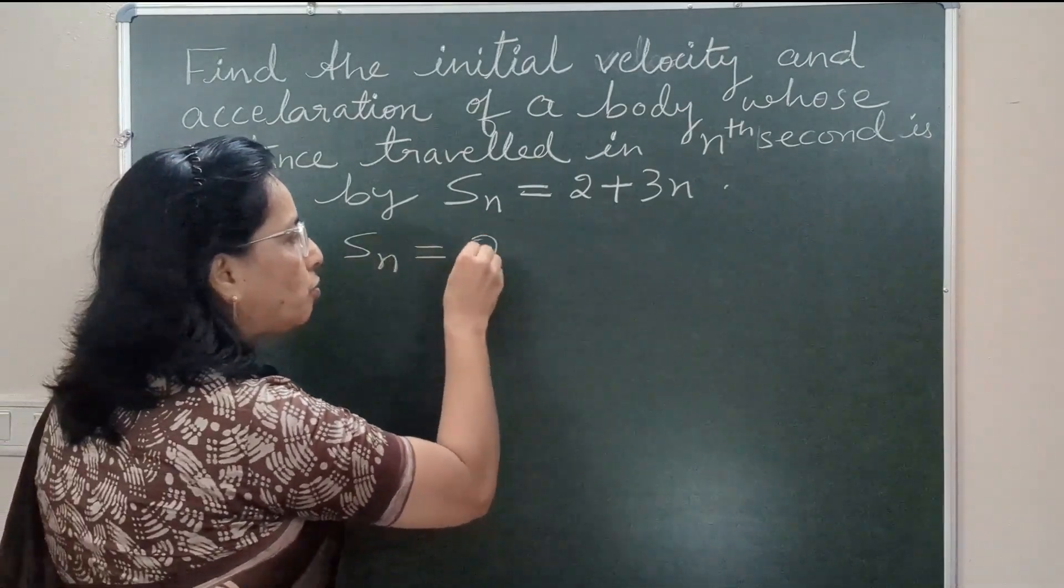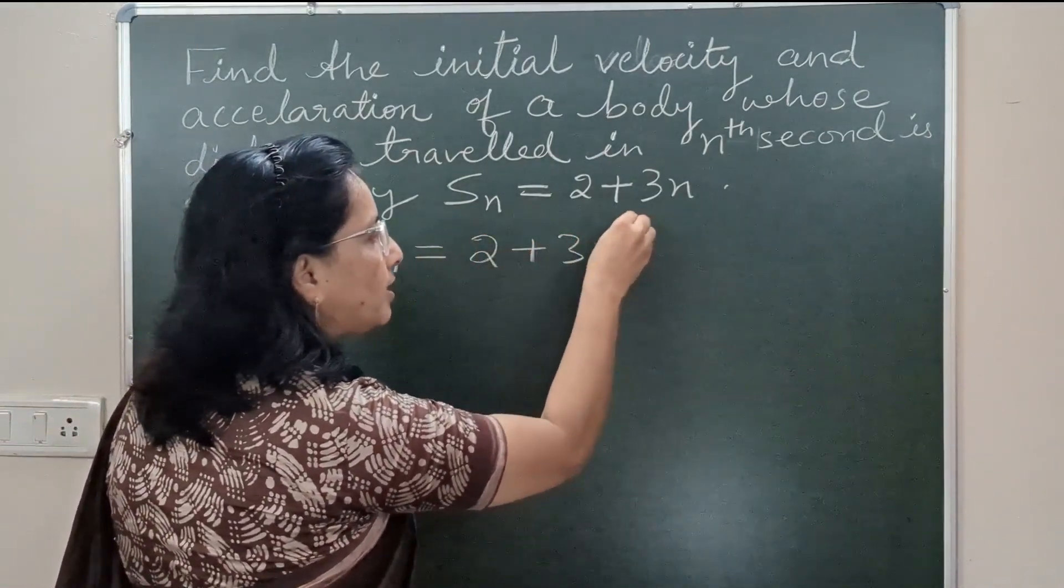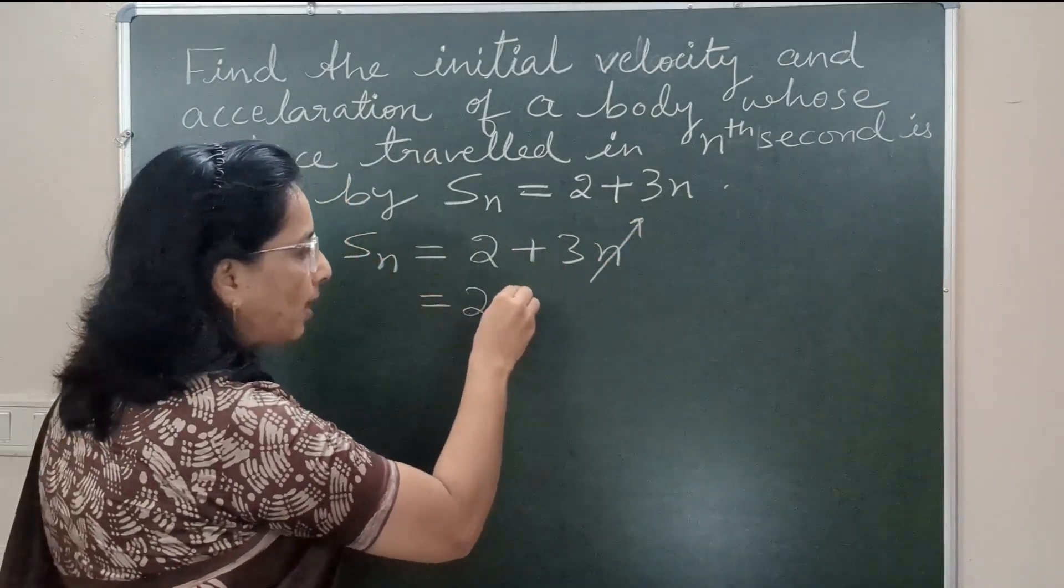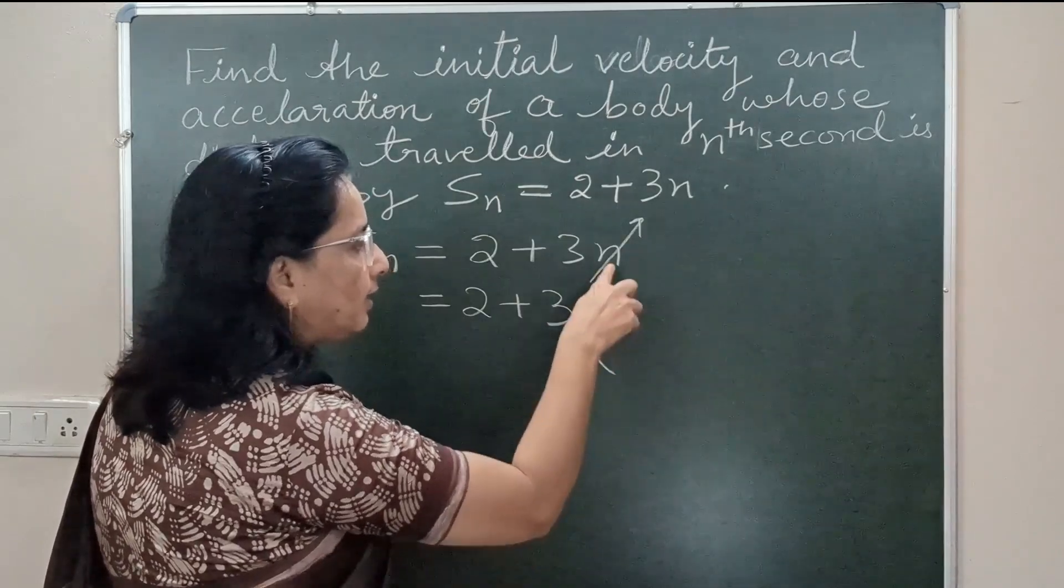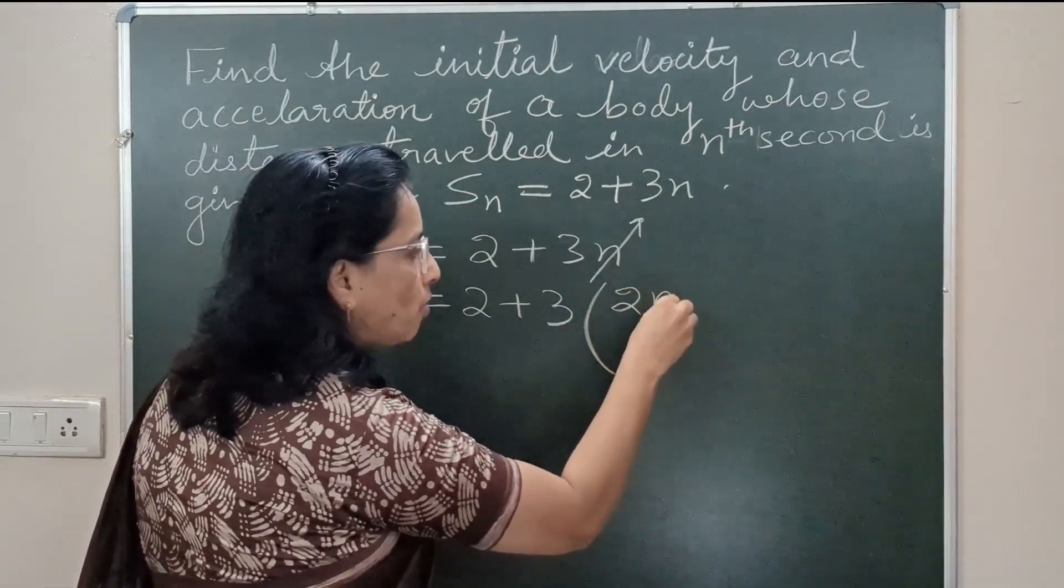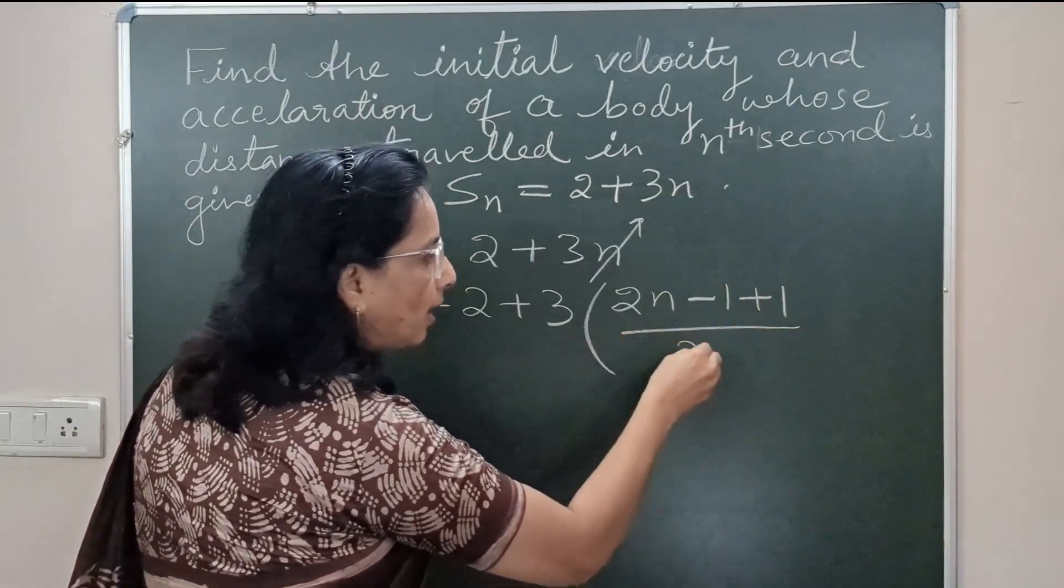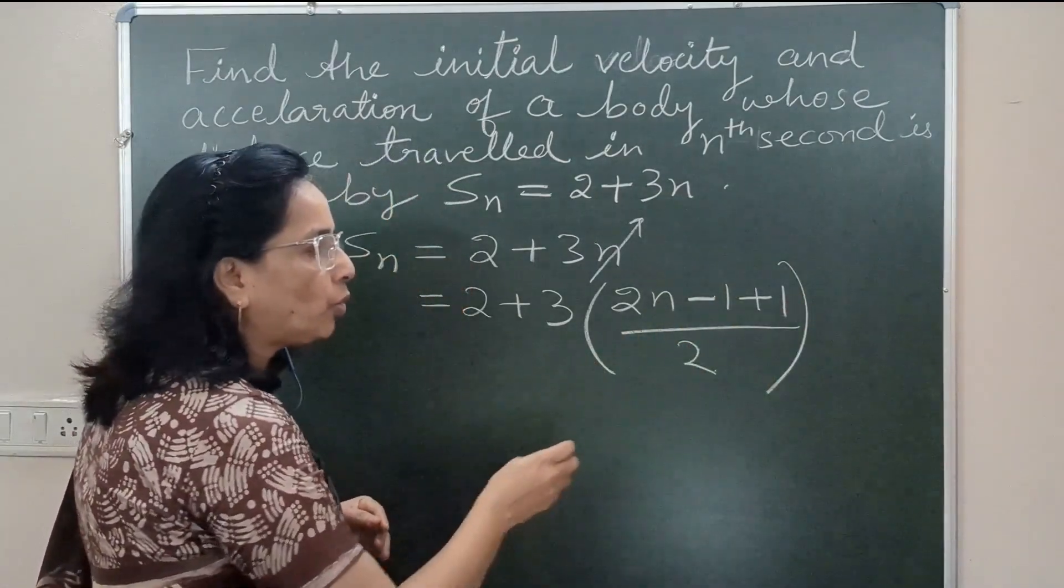We can write this n as 2 + 3n. This can be taken as (2n - 1 + 1)/2. On doing so, this cancels: 2n by 2 is n, and we got the quantity 2n - 1.